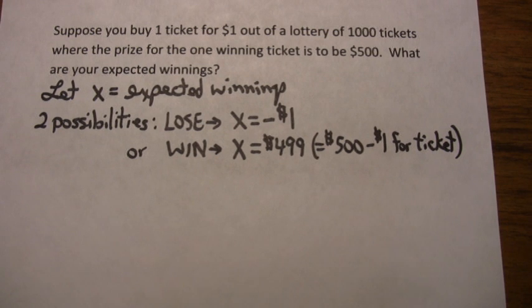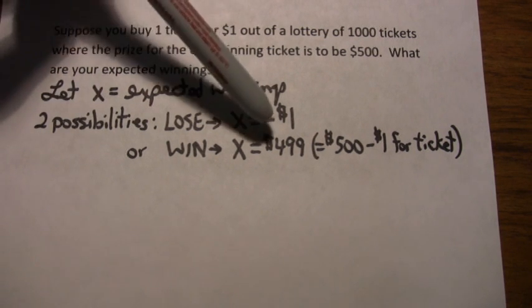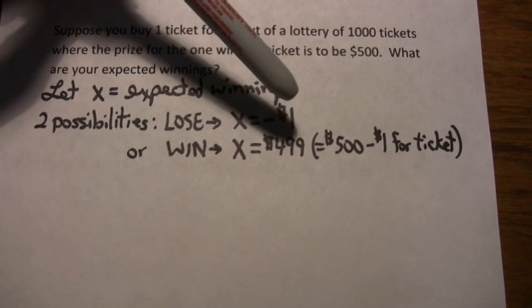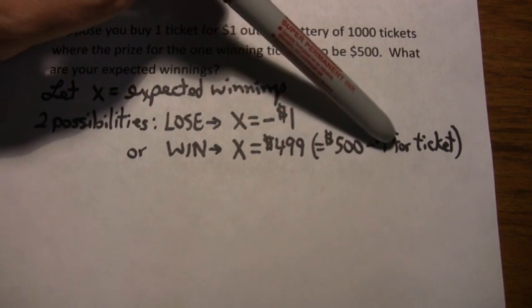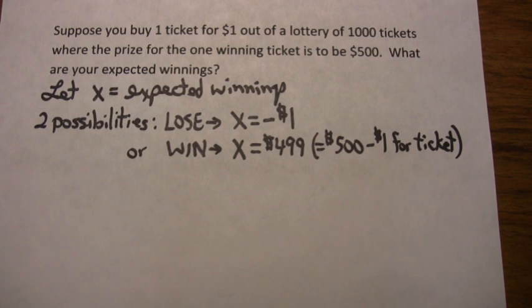On the other hand, what if you win? Well, you say, I win $500. Well, you do win $500, but really you didn't net $500 because the ticket cost you $1, so you really only netted $499. So from an expected winning point of view, you either lose $1 or you win $499. That's the net you make. That's the only two things that can happen.